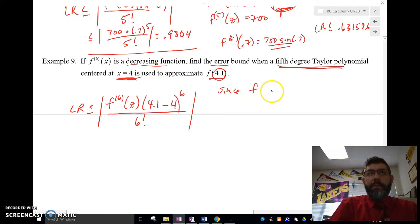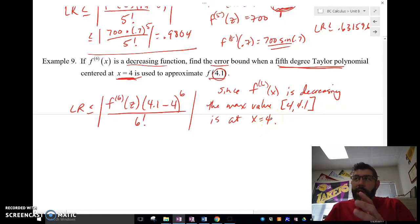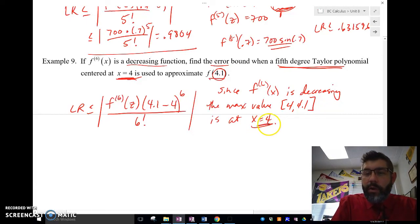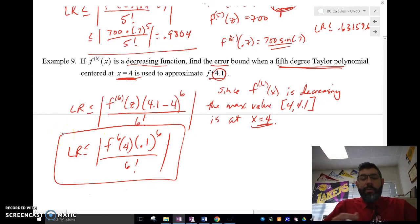So, since f sixth derivative is decreasing, the max value on the interval 4 to 4.1, x to c, is at x equals 4. Because if it's decreasing, 4.1 is going to be smaller than at x equals 4. So, this is our max value. So, our Lagrange remainder is going to be at the sixth derivative of 4 times 0.1 to the sixth over 6 factorial is the absolute value of that. And this is your answer. You actually don't have a number as your answer in this case. Your answer is going to be like this, because we don't know what the function is.